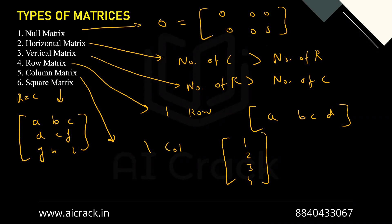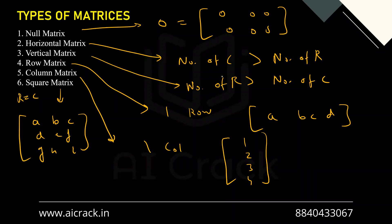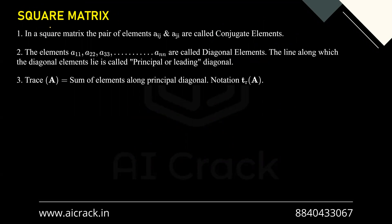To summarize: in a null matrix every element is zero; in a horizontal matrix columns exceed rows; in a vertical matrix rows exceed columns; a row matrix has one single row; a column matrix has one single column; and a square matrix has equal numbers of rows and columns.